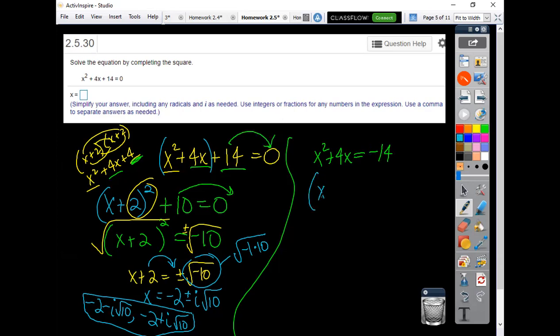Now, x plus half of 4, which is 2, squared. I've increased a 4 that wasn't there, so I need to add a 4 to the other side. Negative 14 plus 4, negative 10.